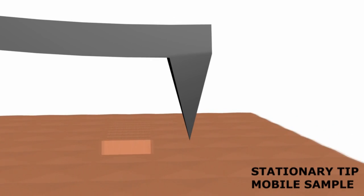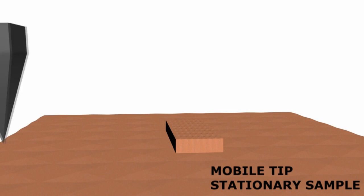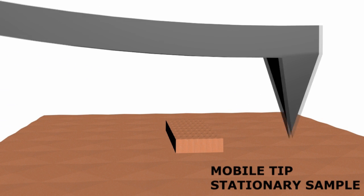The scanning can be done either by moving the sample while the tip holder is stationary, or by moving the tip while the sample is stationary.